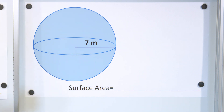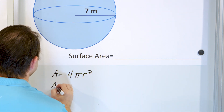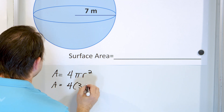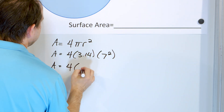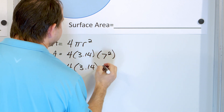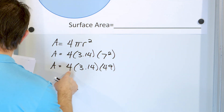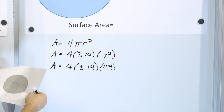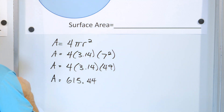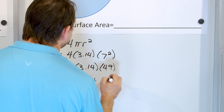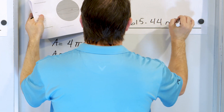Let's move along to problem number three: a sphere with a radius of seven. The surface area is four pi r squared, so the area is four times 3.14 times the radius squared. The radius is seven, so seven squared. Four times 3.14, and seven times seven is 49. When you take four times 3.14 times 49, the area works out to be 615.44. The units were meters, so this is square meters — 615.44 square meters.